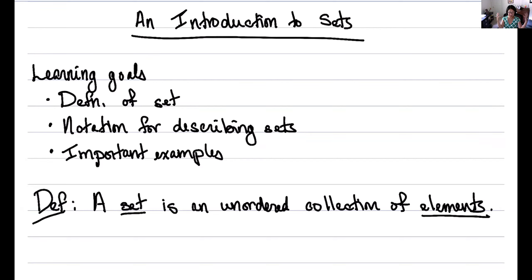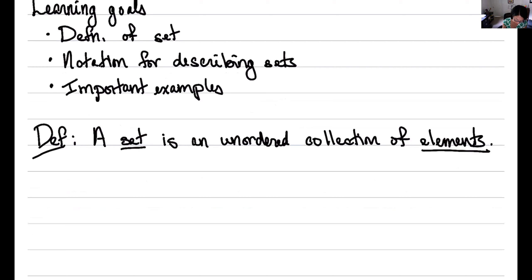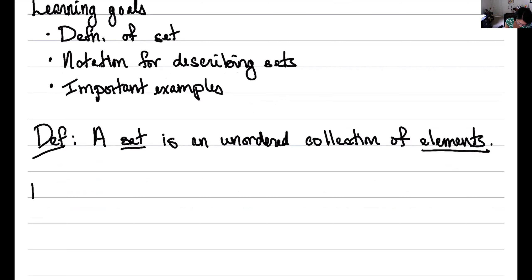So one of the first things, or one of the most important things you'll learn in this course is how to think, and in particular how to think about definitions. So the first thing you should ask yourself whenever you see any definition is, give me an example of that. So let's look at some examples of sets.